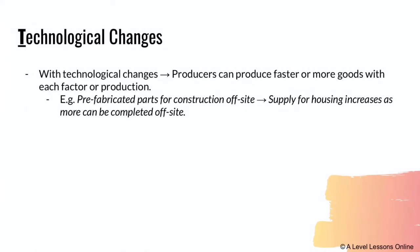Technological changes are quite important. When there are technology upgrades, producers can produce faster or more goods — better goods — with each factor of production. For example, many buildings are now built off-site and then assembled at the construction site, sort of like Lego bricks. This increases efficiency and productivity. Things like AI will definitely help to increase supply, because things can be done faster in the same amount of time.